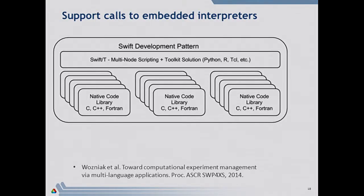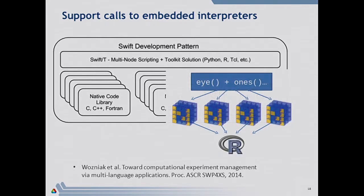Swift K primarily does dataflow through files, and when calling an app program, you have to wait for those files to be produced before sending results elsewhere. In Swift T, we're operating on C or Fortran libraries, so we operate on scalars, strings, or a data type called a blob — basically a byte array. You can put whatever you want in there and it's like a message. When you send that into a function, it receives a pointer to the byte array and can produce a byte array as output — so you don't have to go to the file system. We built plug-ins for scripting languages like Python and R, so you can put a fragment of Python in your script and call NumPy for numerical computing or use R for statistics.